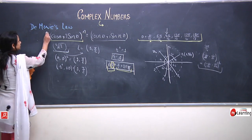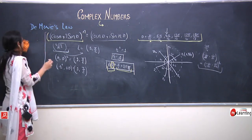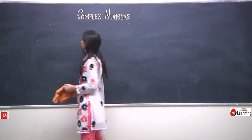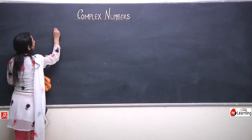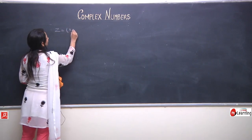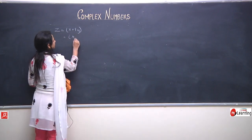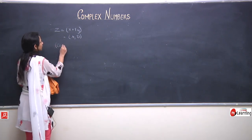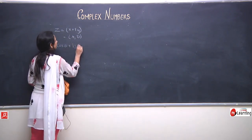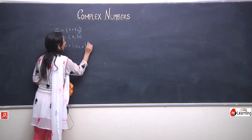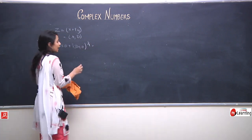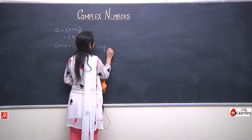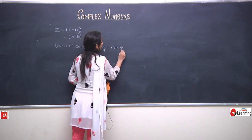Now let us generalize the result for finding any root of any complex number. We have a complex number of the form x plus iota y, which in polar coordinates is (r, theta). Whenever I want to find the qth root, I need cos theta plus iota sin theta to the power 1 by q. Using De Moivre's theorem, this equals cos theta upon q plus iota sin theta upon q.